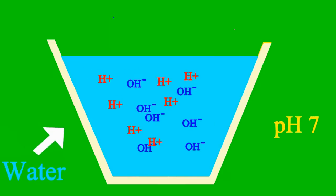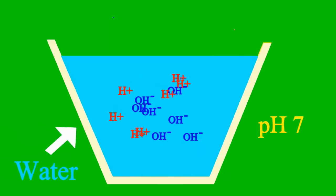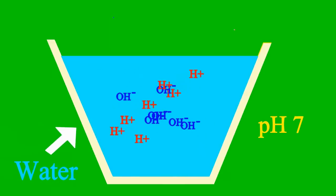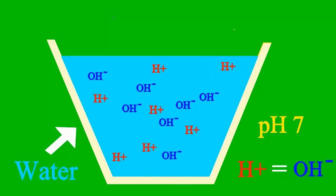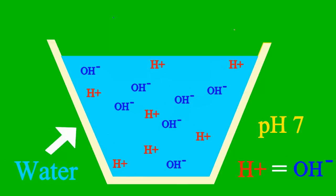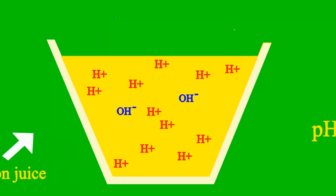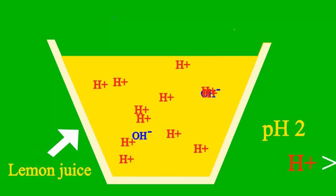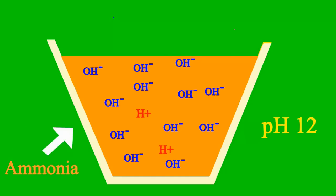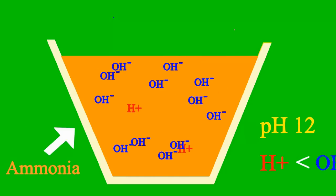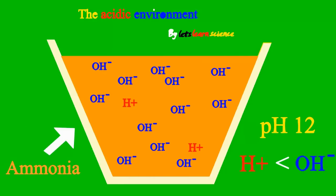When the pH is 7, then it's a case where the sample is neither acid nor base. But less than 7, it's an acid; say more than 7, it's a base all the way.